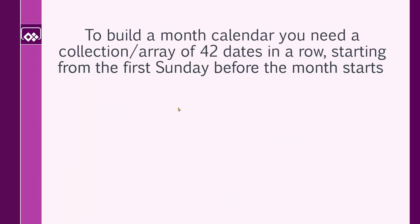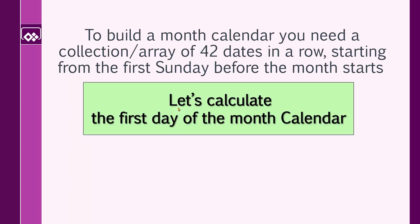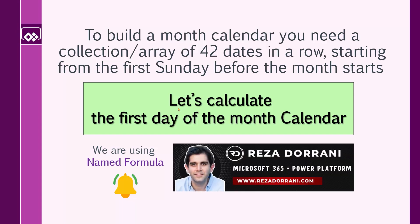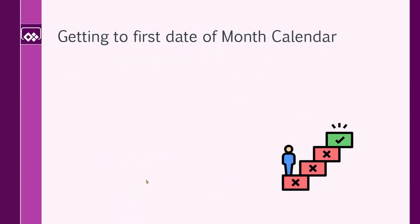To build a month calendar, you need a collection or array of 42 days in a row, one after another, starting from the first Sunday before the month starts. There are different ways to calculate the first day of the month calendar. For this one, I want to use named formula. We can do it without named formula — it is fairly new, almost a year and a half to two years that this feature has been added to Power Apps. If you are not familiar with it, Reza has a wonderful video; I will put the link here so you can watch it.